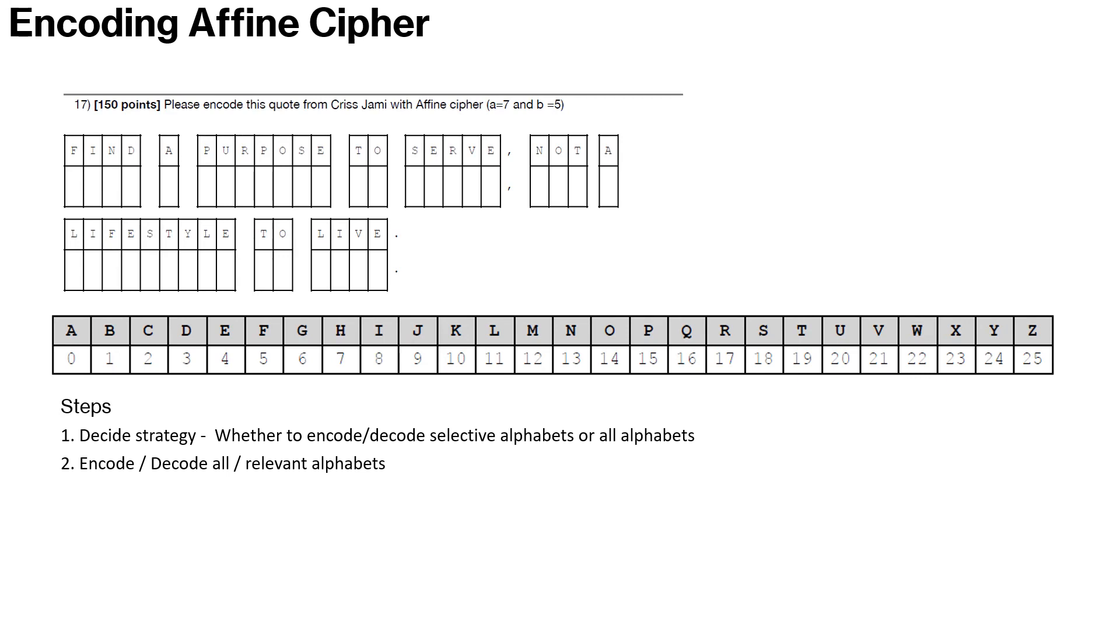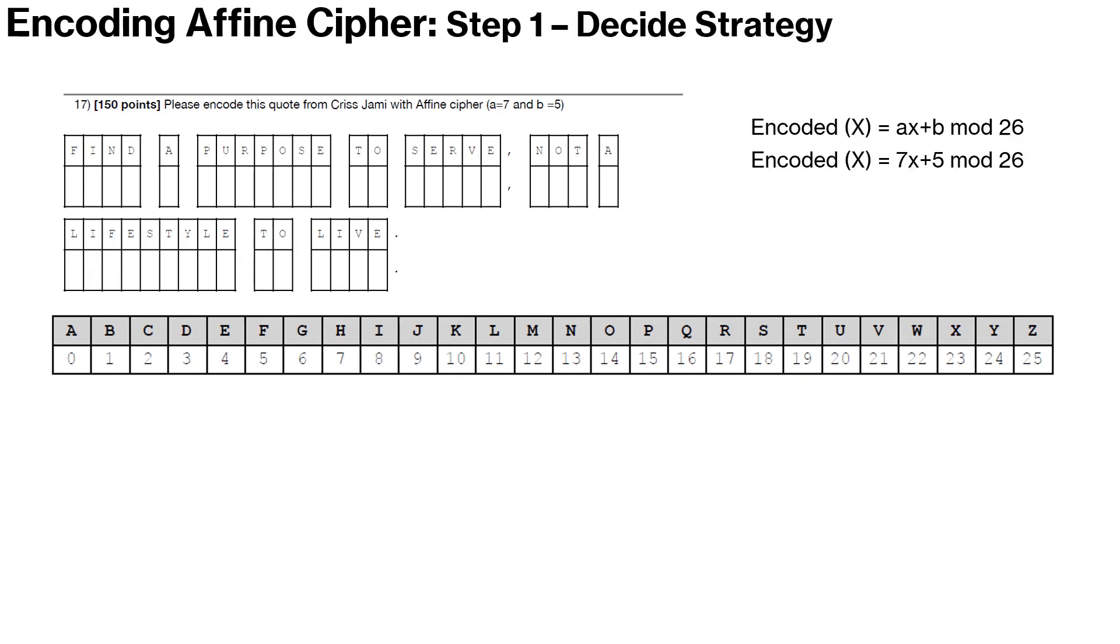Second one is to encode or decode all the relevant alphabets. And once you have decoded everything or encoded the alphabets, you go ahead and encode the plain text. Or in this case, we will be encoding the plain text, but you can also use the same thing to decode the cipher text. So let's get started on this code and move to step one.